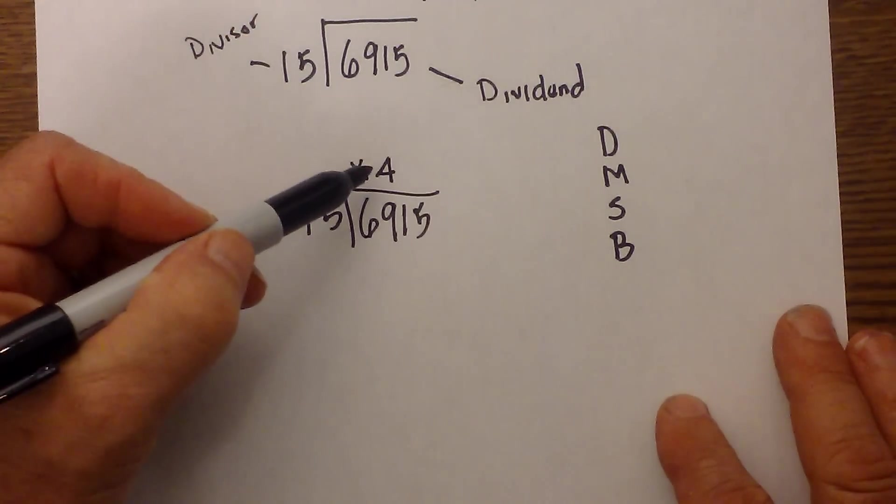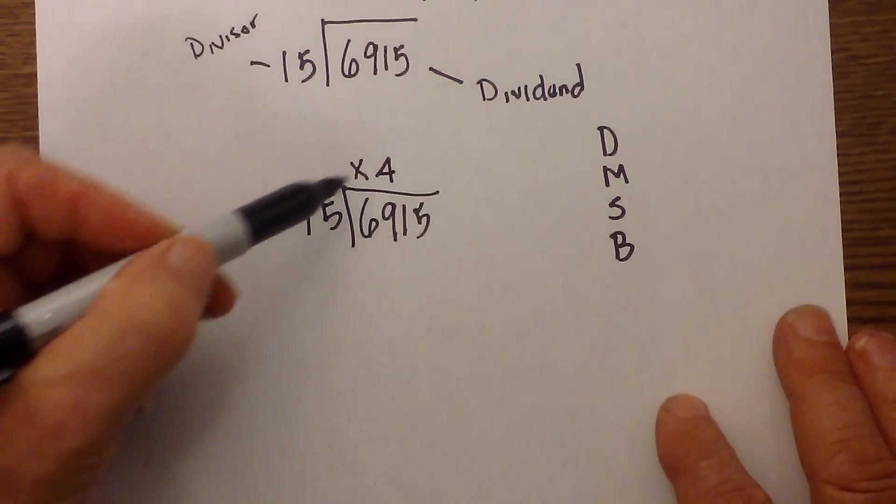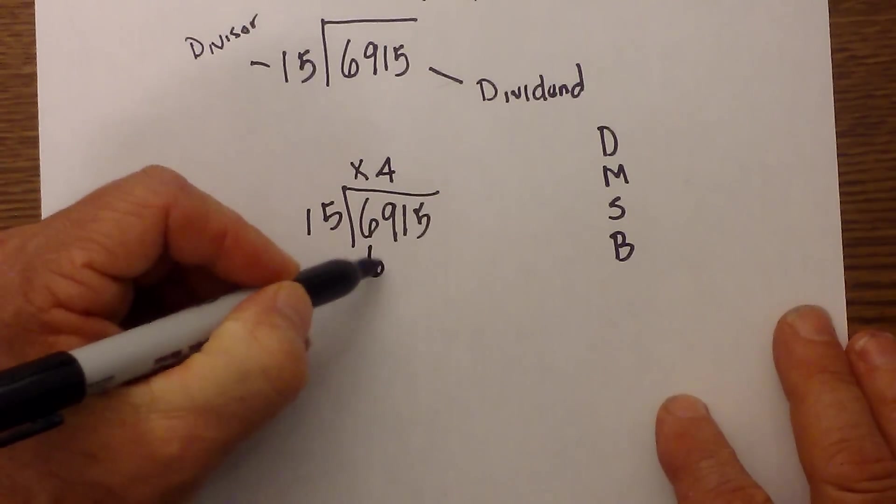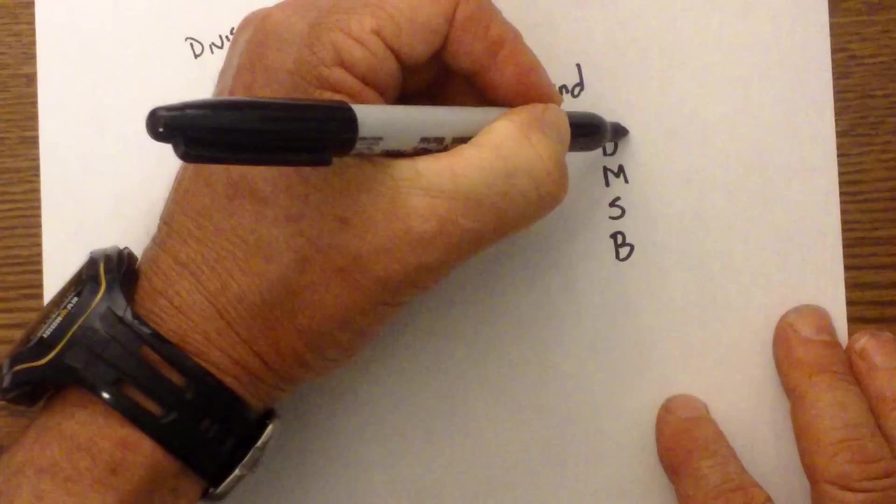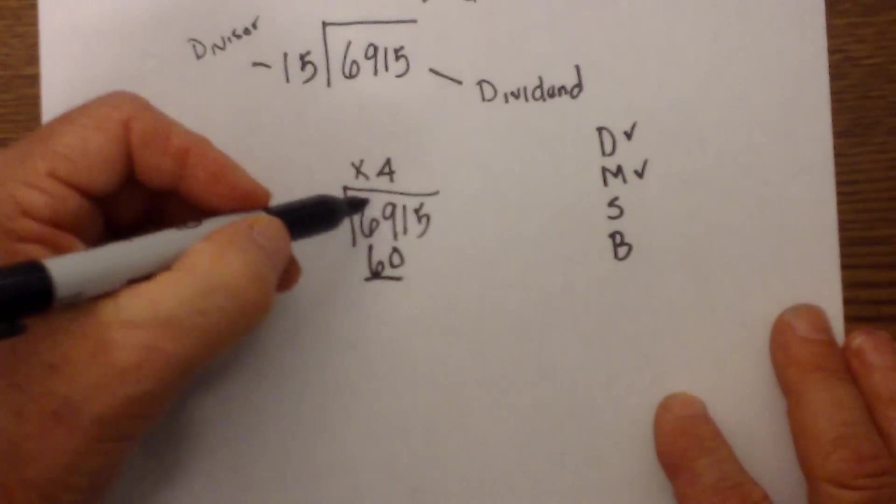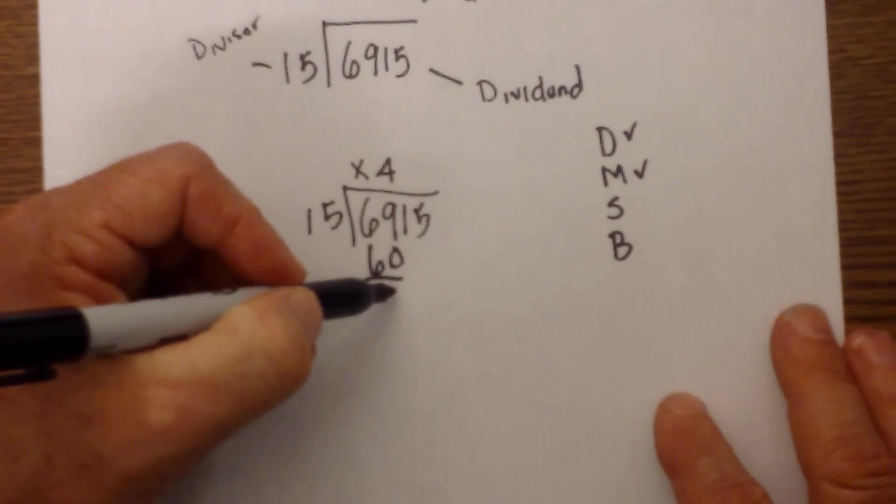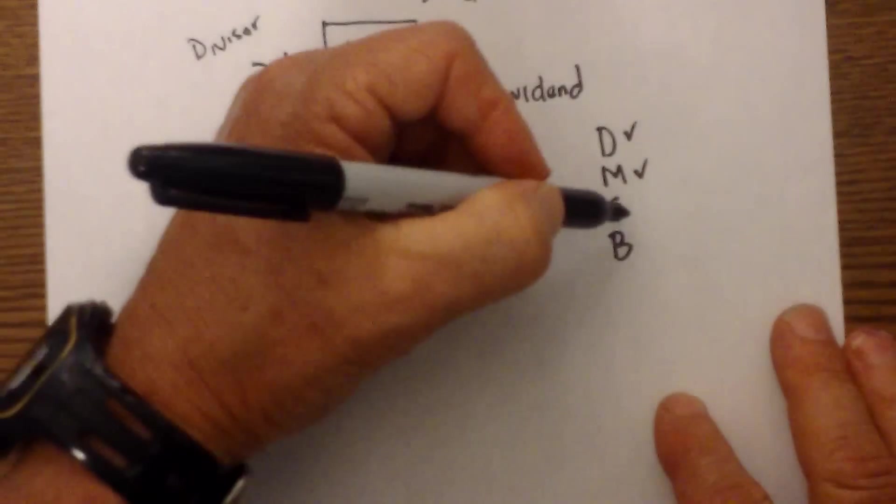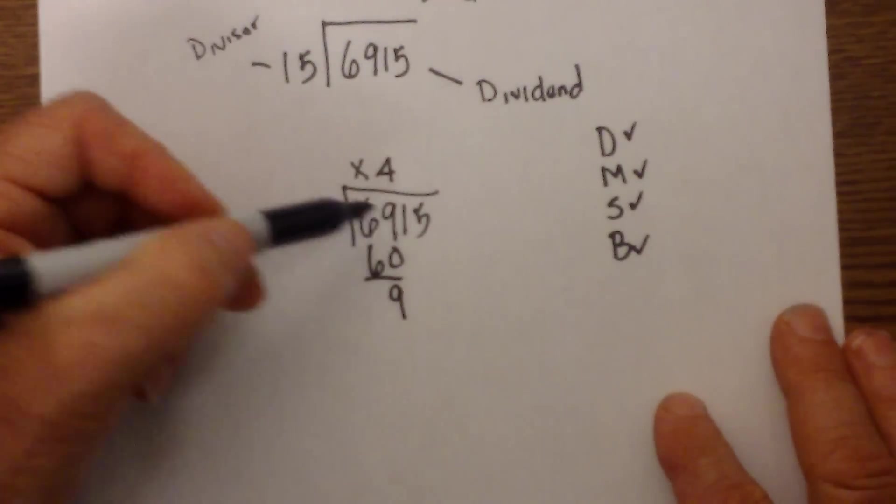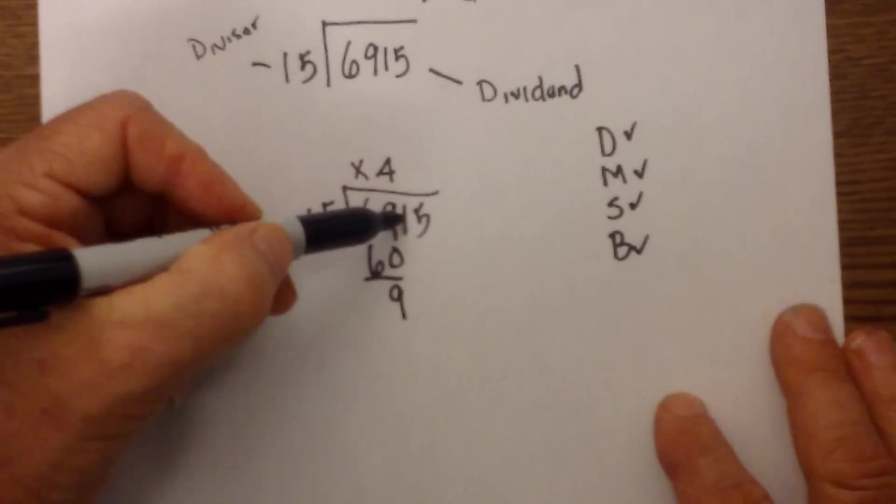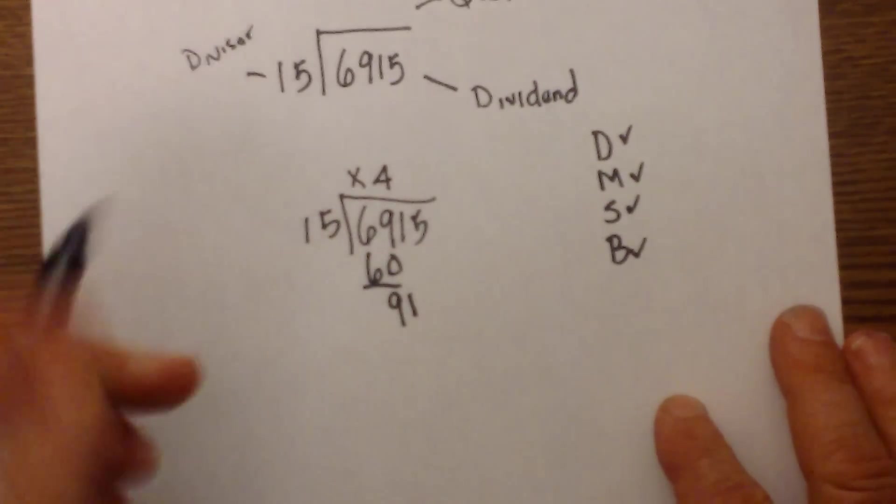Next we do multiplication. 4 times 15 is 60. So we have done division, we have done multiplication. Now we subtract. 69 minus 60 is 9. We have subtracted, and the b is bring down, and we are going to bring down this 1.